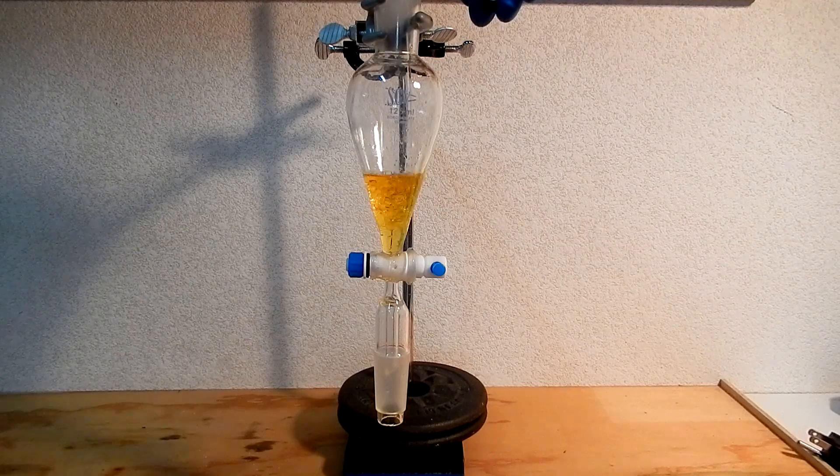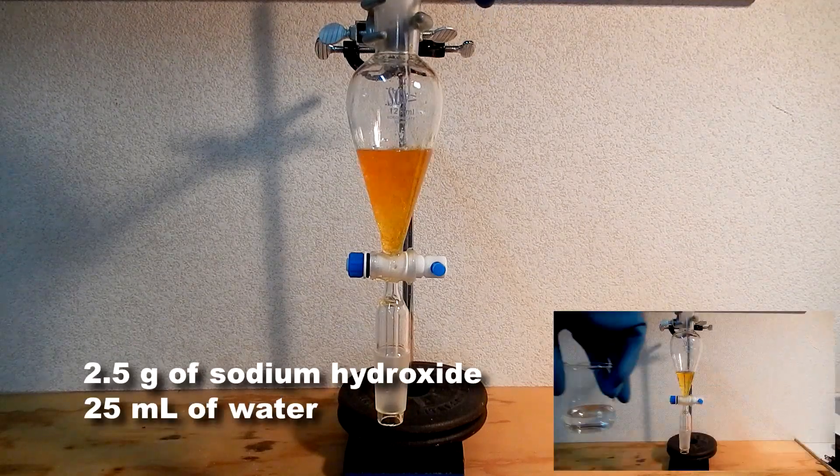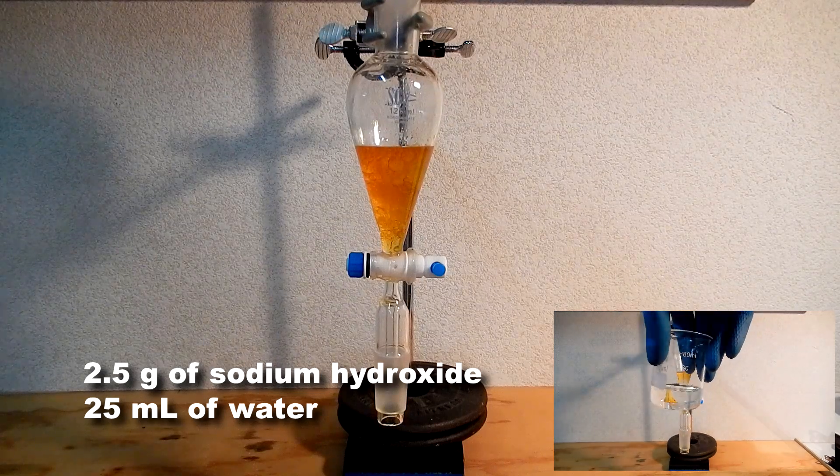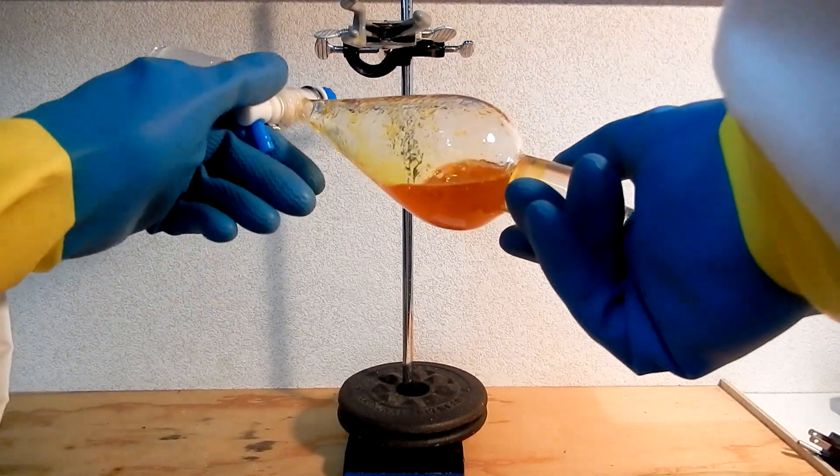Transfer the chlorobenzene back to the separatory funnel and wash it twice consecutively with solutions of 2.5 grams of sodium hydroxide in 25 milliliters of water. The sodium hydroxide solution helps to remove phenol and other side products.